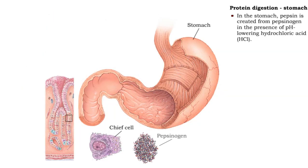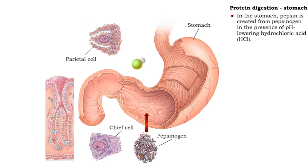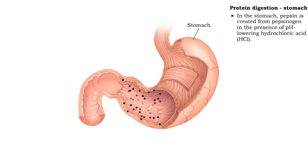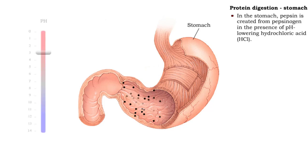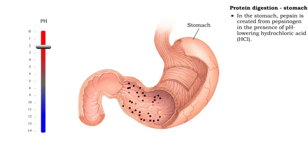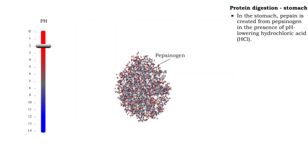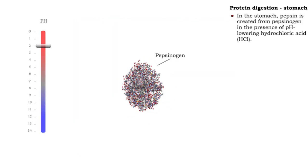In the stomach, proteins are initially met by hydrochloric acid and pepsinogen, an inactive form of pepsin. The pH-lowering effects of hydrochloric acid convert pepsinogen to pepsin.